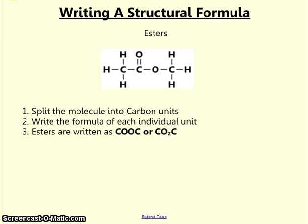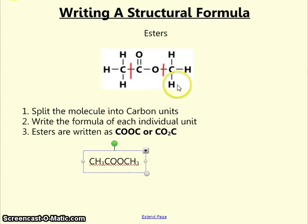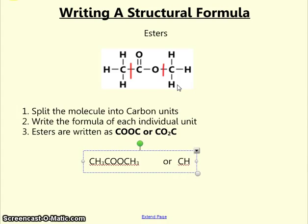Writing the formula for esters — these are very similar to carboxylic acids. The formula for this compound is CH3, COO, and then the next carbon has only three hydrogens on it, giving CH3. As with the carboxylic acid, you could also write this as CH3, CO2, CH3.